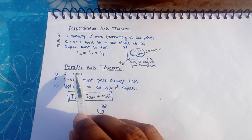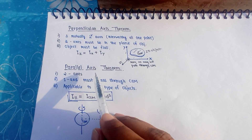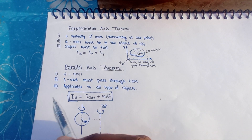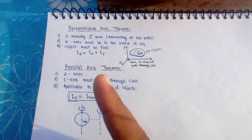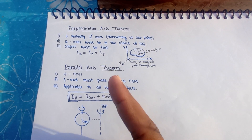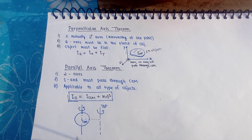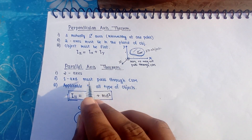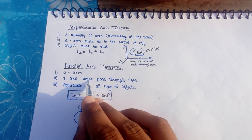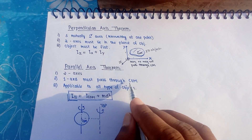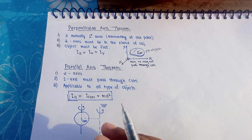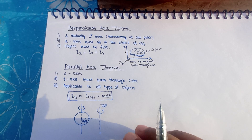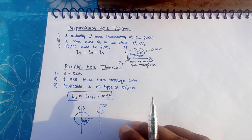Now the next theorem: the parallel axis theorem. In this theorem, only two axes are involved, and one axis must — must — pass through the center of mass. This is a mandatory condition. And it is applicable to every type of object — 2D, 3D, whatever.